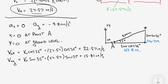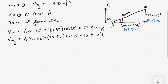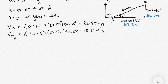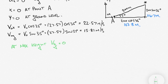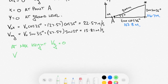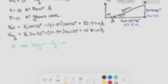Now we know the x and y components of the initial velocity for the projectile motion. A key thing to remember: at the highest point, the y-component of velocity is zero. So at maximum height, vy = 0.